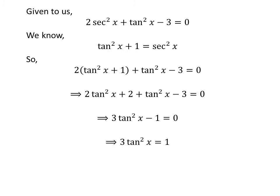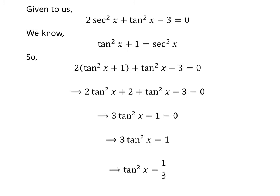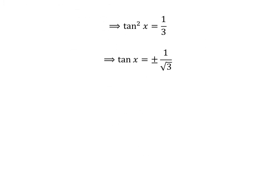Taking minus 1 from the left-hand side to the right-hand side gives us 3 times square of tangent of x is equal to 1. Dividing by 3 gives us square of tangent of x is equal to 1 upon 3. Taking the square root of both sides, we get tangent of x is equal to plus and minus 1 upon square root of 3.